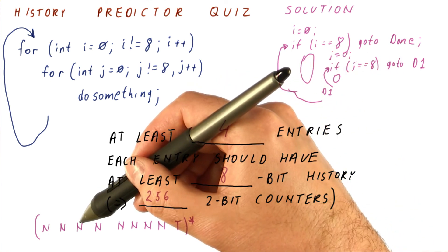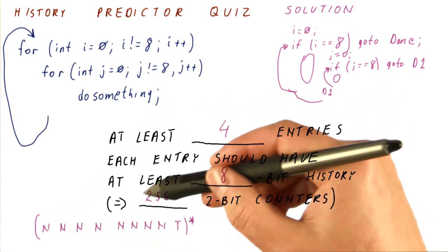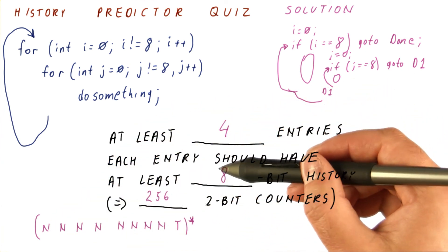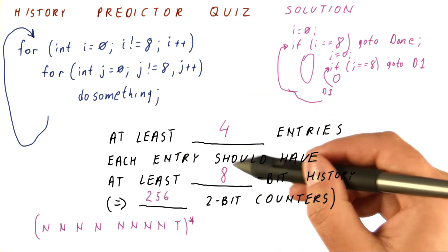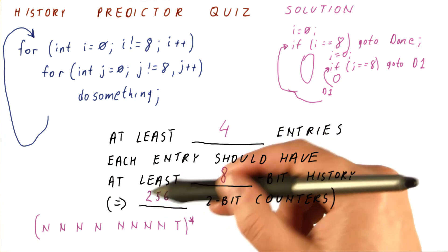We have a pattern of six not taken, then taken, not taken, et cetera. So we're really using only nine of these two-bit counters, which again shows that a predictor of this type, with a very long history, will waste a lot of its many, many entries.